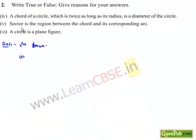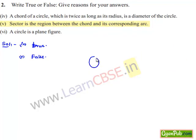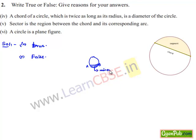Moving on to the fifth bit: a segment is the region between a chord and its corresponding arc — that is false. Because a segment is the region between a chord and either of its arcs. If we consider a chord AB, the region between AB and the smaller arc is called the minor segment, and the other remaining part is the major segment.